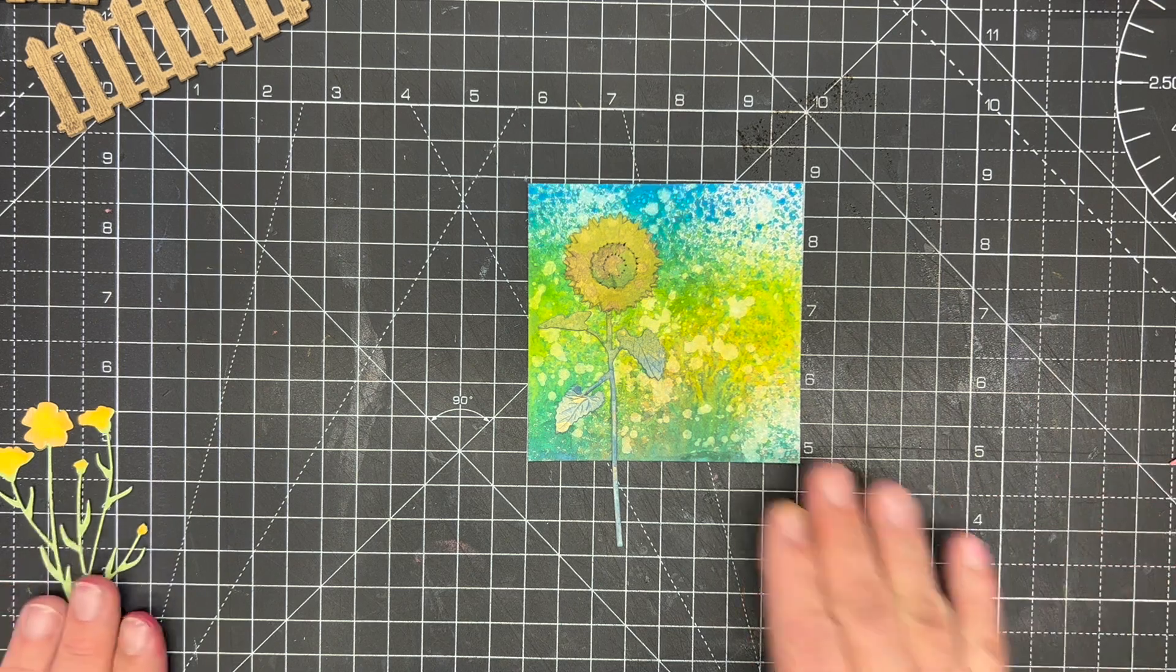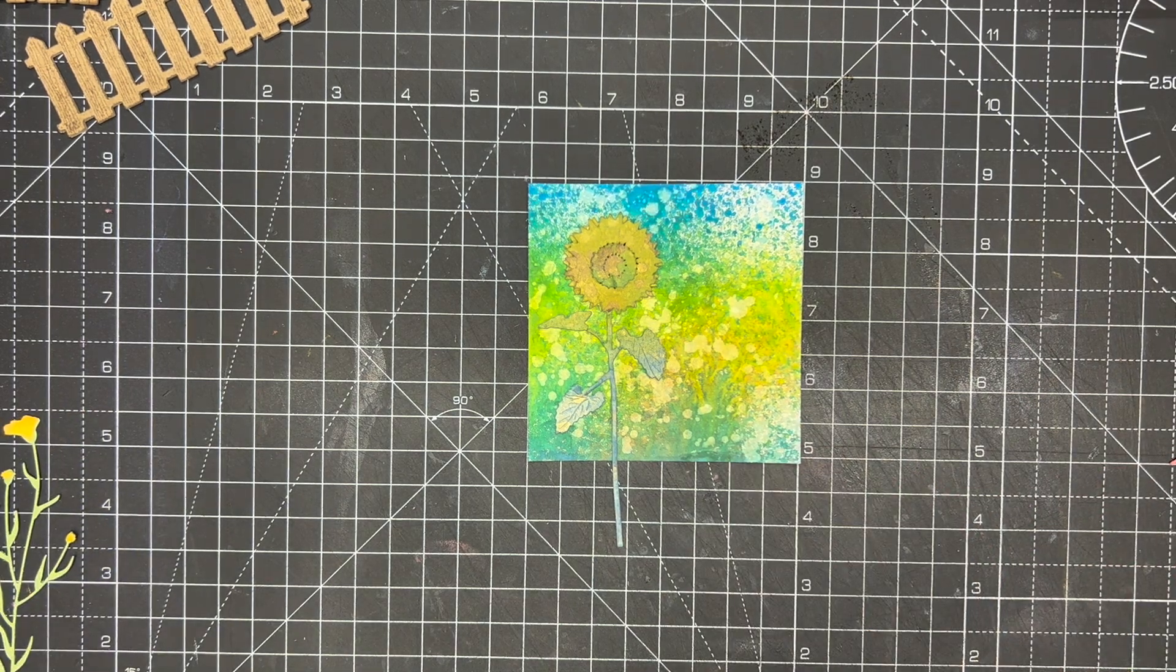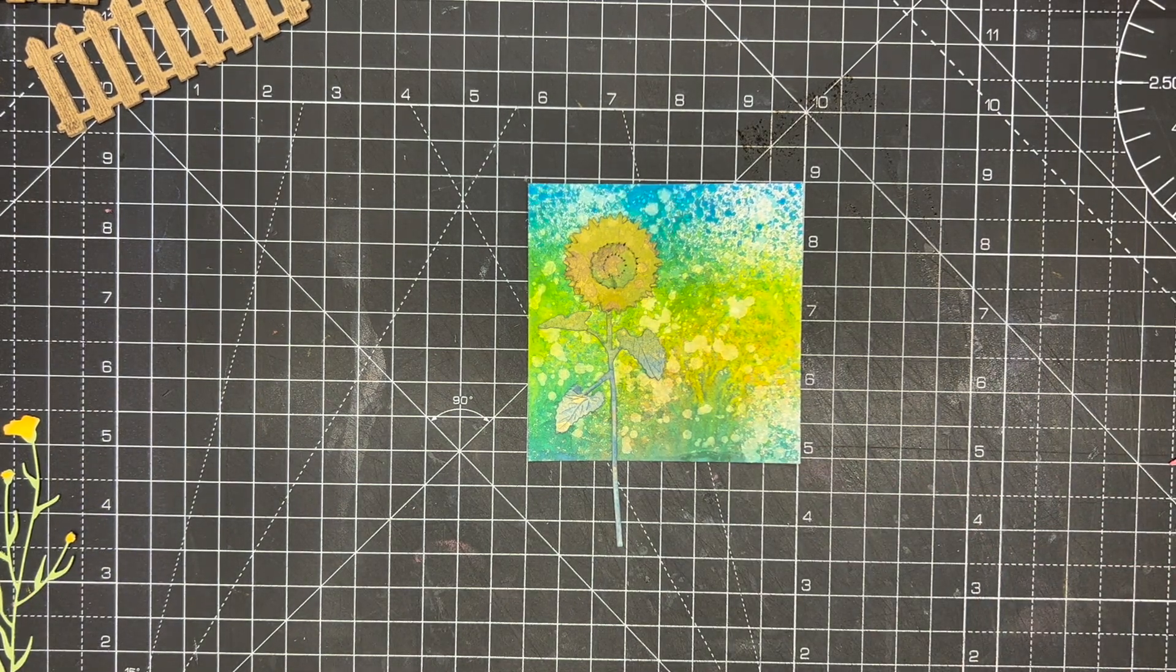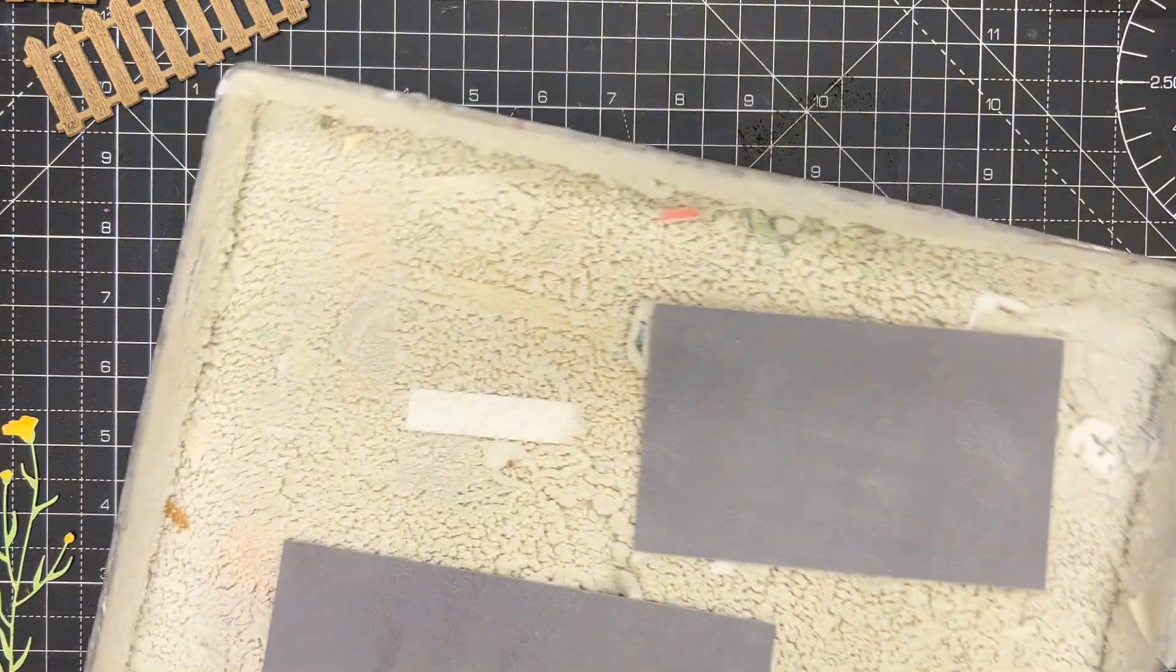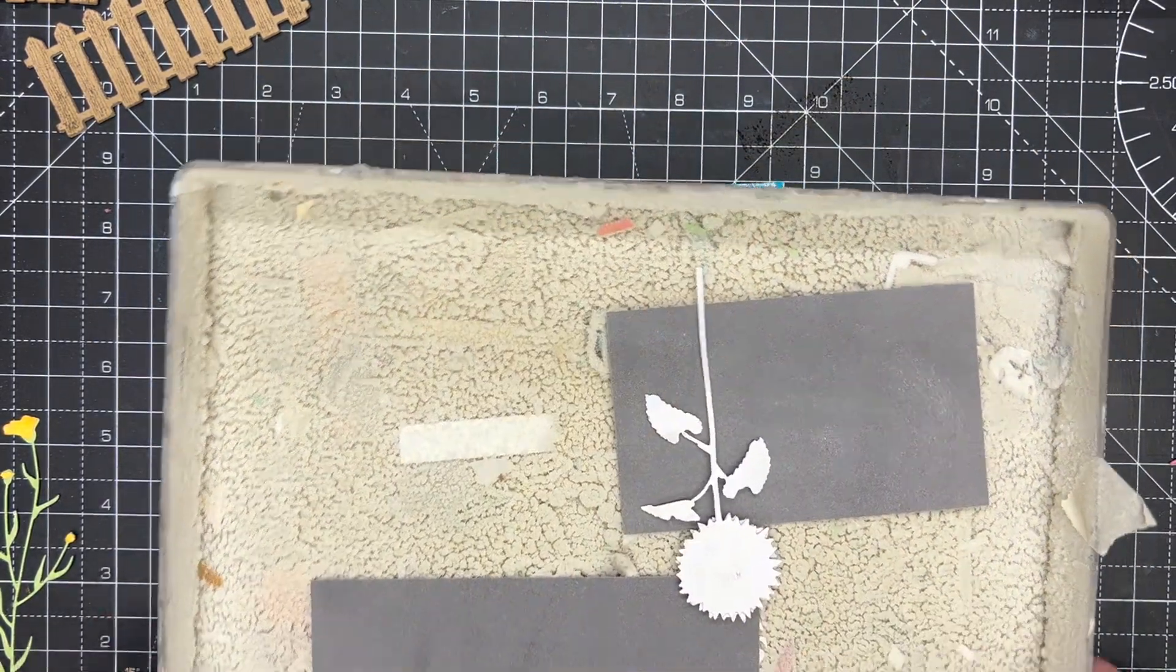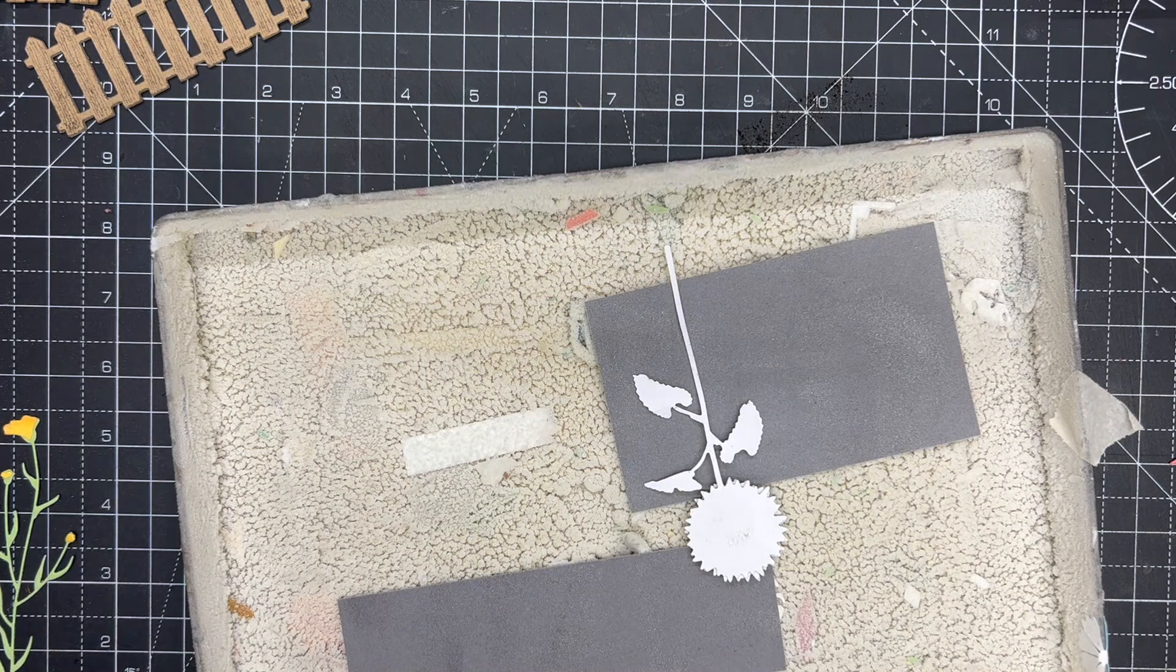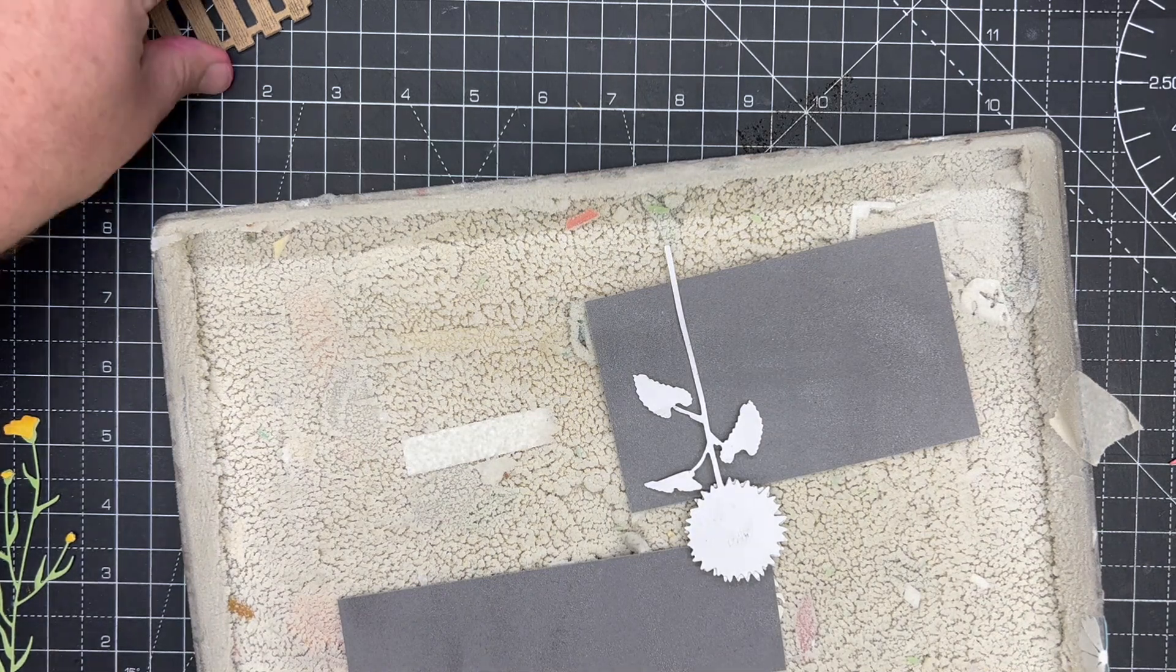So again I want to take a little bit of spray glue. If you want to see how the sunflower is put together, you want to watch the video with the sunflower. We'll take our garden fence and again give them a light spray with the spray glue.